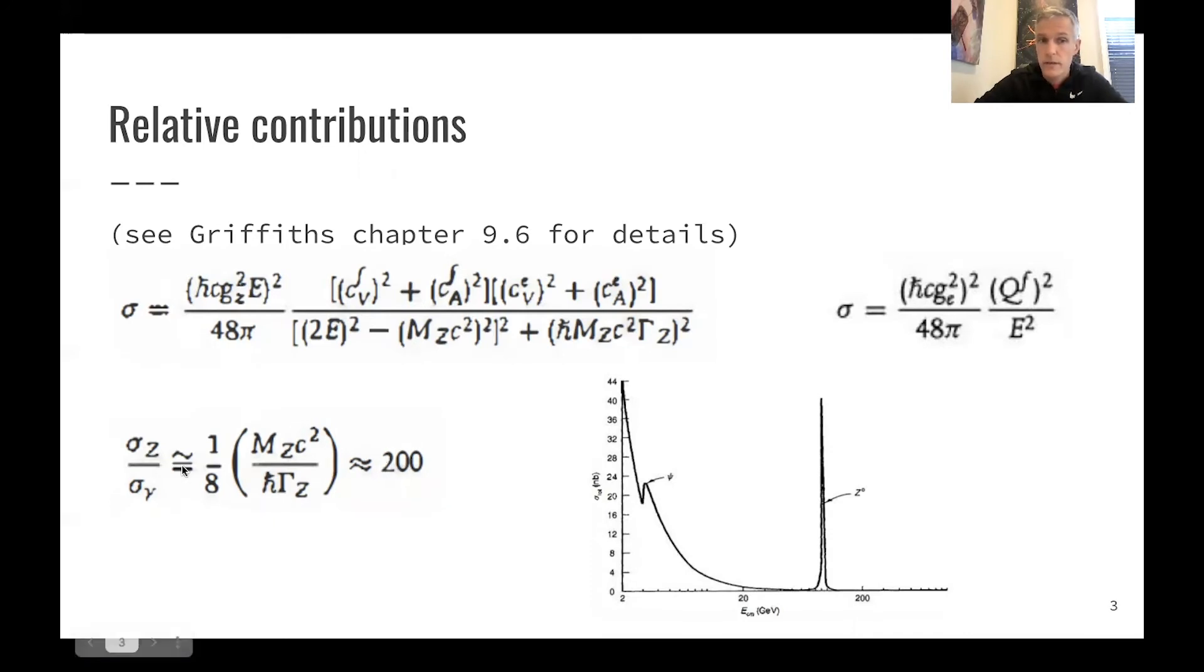So the resonance is about 200, the cross-section at the resonance from the z-boson is about 200 times that over just the photon exchange. So this allows you to study the z-boson with great precision at those colliders. You have sizable cross-section when you are on electron-positron colliders.